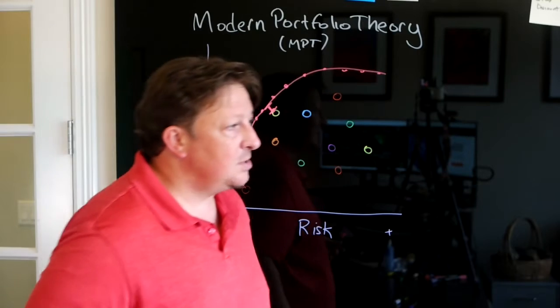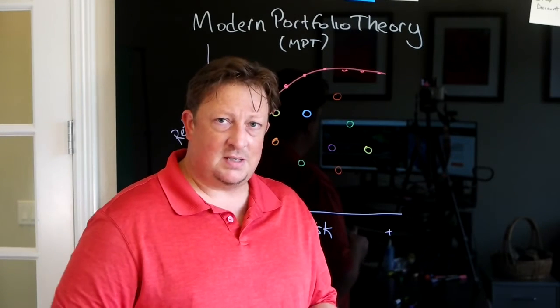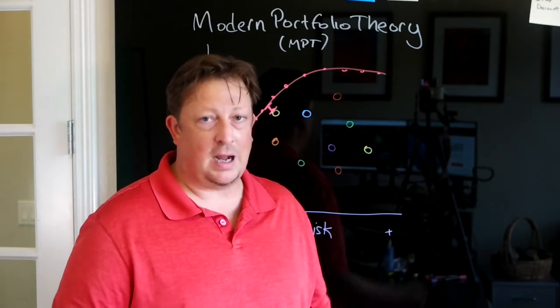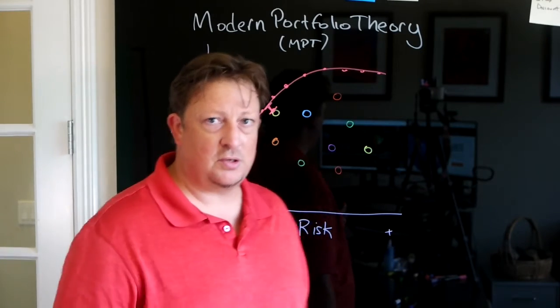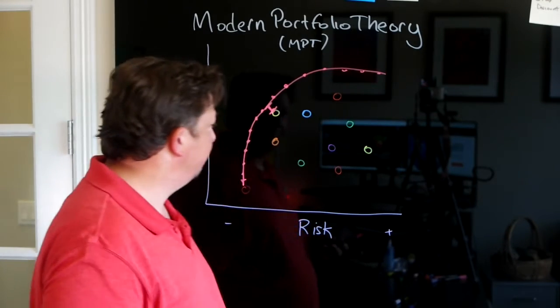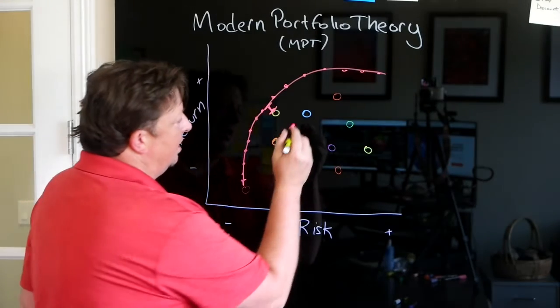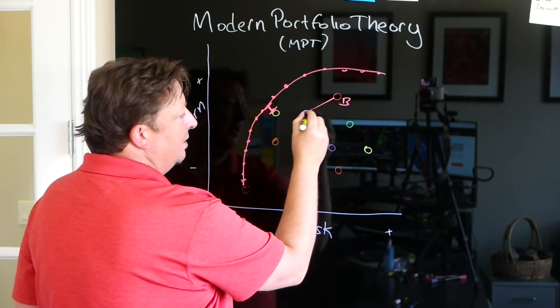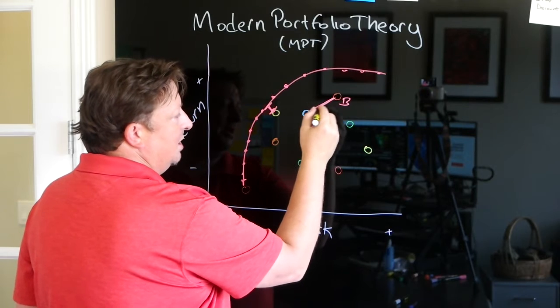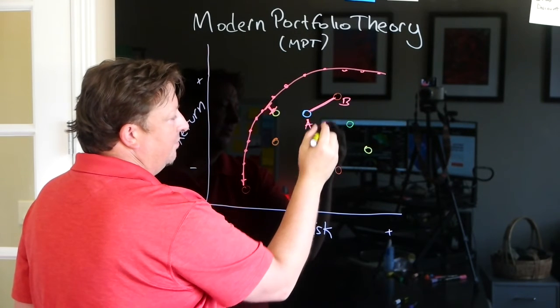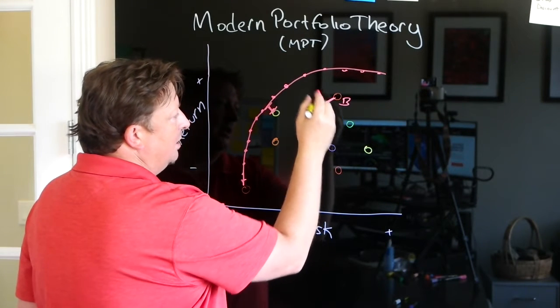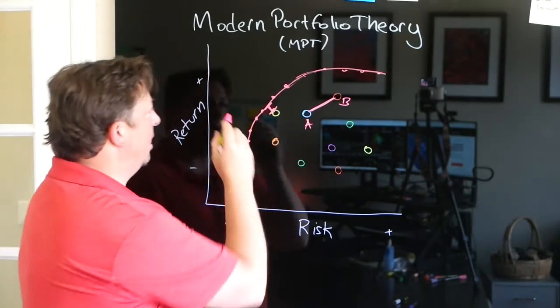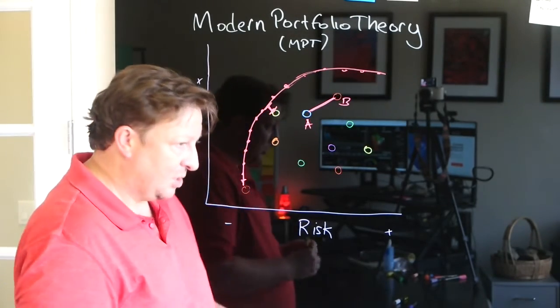In investments, we hope to find investments that are uncorrelated or less correlated or ideally negatively correlated, although there's not that many of those out there. But let's say this is investment A, this is investment B, and we can combine investment A and B in these different ratios because of the correlation between them that provide these portfolios that are just better. We're getting a better risk-adjusted return.